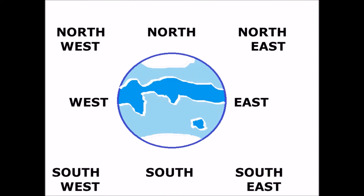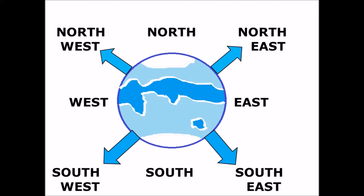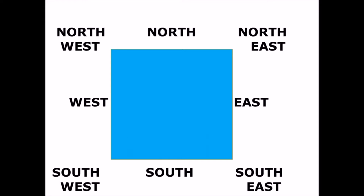The four basic directions are north, east, south, and west. Where north and east merge it is called northeast. South and east merge is called southeast. South and west merge is called southwest. And north and west merge is called northwest. So there are eight directions in total.